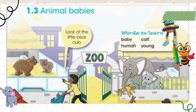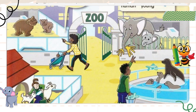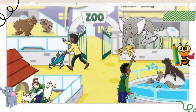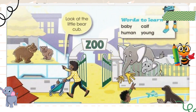So the four words are baby, calf, human, and young. Now let's look at the picture. This is a picture of a zoo where you can see different animals and some human beings enjoying with them. Look at the little bear cub — where bear babies live, they are known as cubs. So this is the bear and the baby bear is a cub.